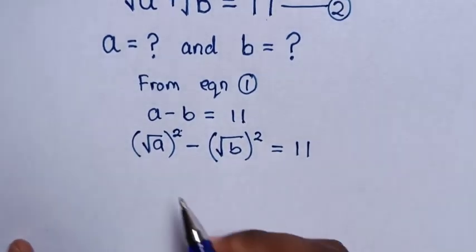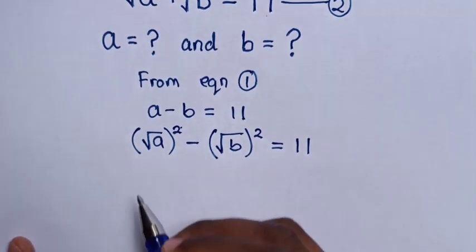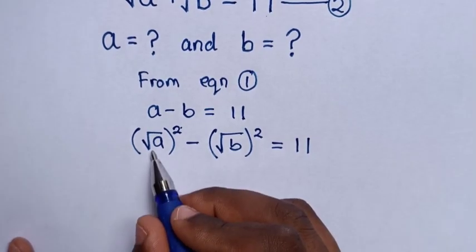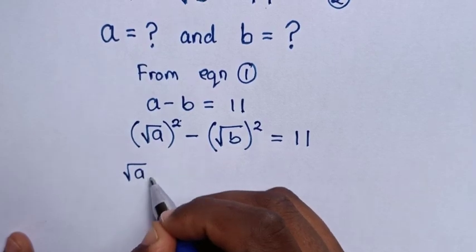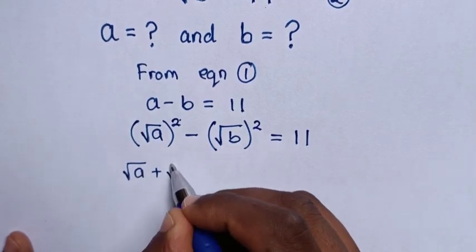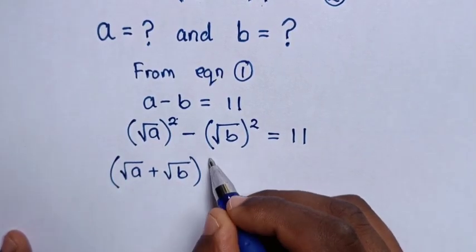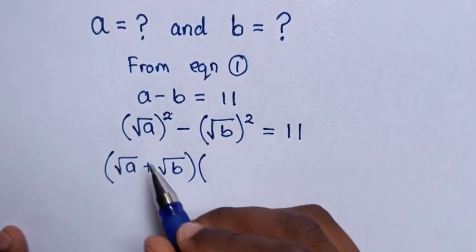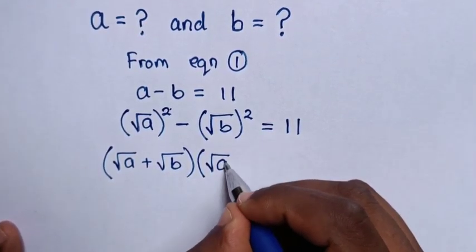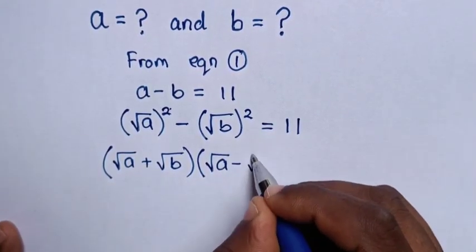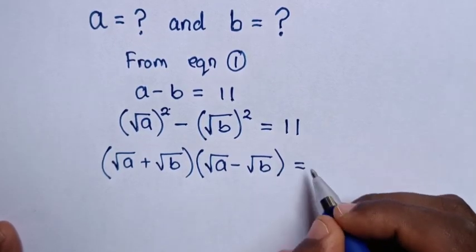This expression is now in the form of a difference of squares, so we factor it as: square root of a plus square root of b, times square root of a minus square root of b, equals 11.